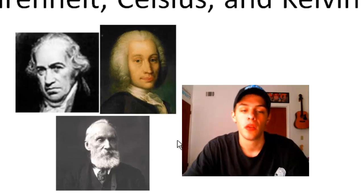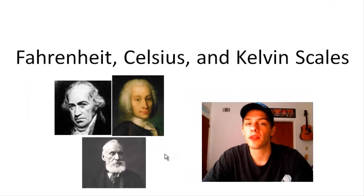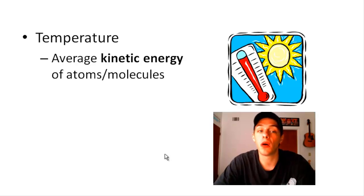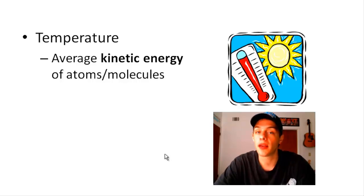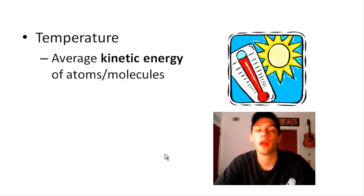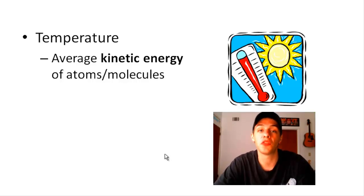Before getting into these three scales, let's make sure we're on the same page about what temperature really is. Temperature is a measure of the average kinetic energy of the atoms or molecules that compose a sample. Kinetic energy is the energy associated with motion. For instance, if I had two blocks of aluminum, one hot and one cold, the atoms in the hot block are going to be moving around much faster on average than those in the cold block.